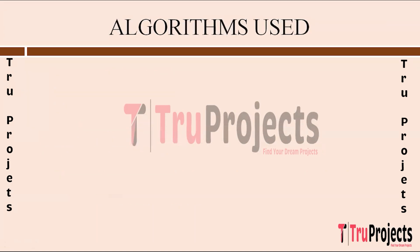Regarding the algorithms used: OpenCV is a powerful open-source library designed for computer vision and image processing tasks. It provides a wide range of functions and algorithms for object detection, image segmentation, and feature extraction. In this project, OpenCV is utilized for its robust capabilities in processing facial images, extracting relevant features, and preparing them as input for recognition models like SVM, KNN, and CNN. Its versatility and efficiency make it an ideal choice for handling complex image processing tasks.